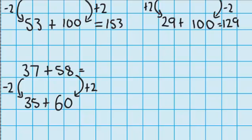So now I've got 35 plus 60, which equals 95. So 37 plus 58 must equal 95.